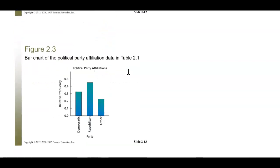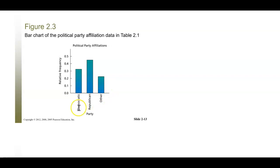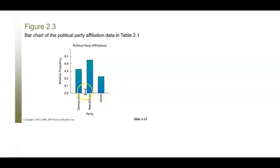Another way is a bar chart. Keep in mind this will be very different from histograms used with quantitative data. In the bar chart, we have the three categories — Democrat, Republican, and Other — with relative frequency on the y-axis and categories across the x-axis. Notice the spaces between the bars — that's what makes this a bar chart and not a histogram. Bar charts are used to represent qualitative data.